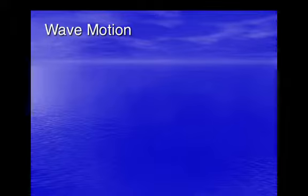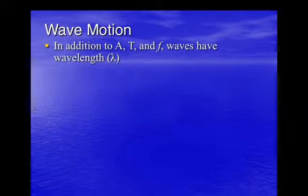Hi everybody. Welcome back to our second lecture on mechanical waves, where today we're going to focus on wave motion and how waves can be affected in different ways. From simple harmonic motion, we already know that things have properties of having an amplitude, a period, and a frequency. However, waves have an additional property called the wavelength, given by the symbol lambda.